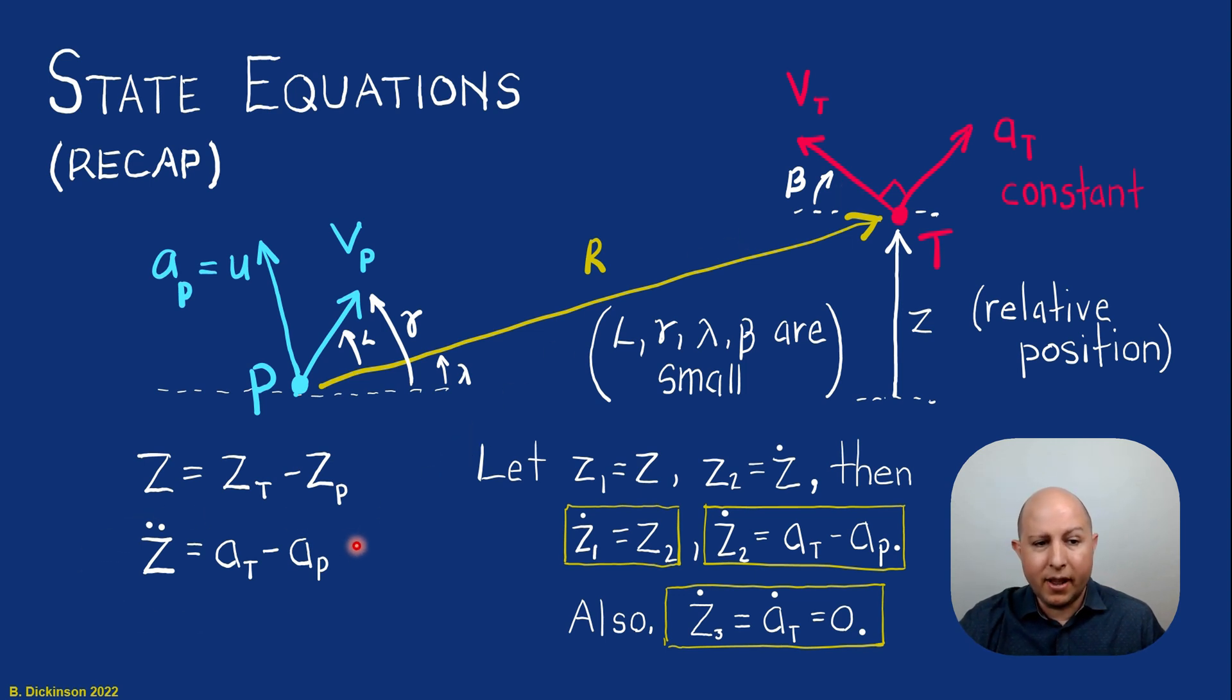So we arrived at the simple kinematics last time, z double dot, that's the second derivative of the relative separation between pursuer and target, is equal to target acceleration minus pursuer acceleration. And so we have our kinematic equations, and notably the additional state, that state that was not there in section 1, is the target acceleration.